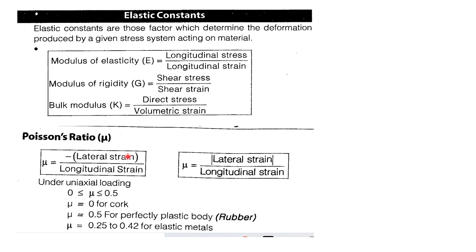Poisson's ratio ranges from 0 to 0.5: 0 for cork, 0.5 for rubber (perfectly elastic body). For elastic metals it is 0.25 to 0.4. Mild steel is 0.286, approximately 0.27 to 0.28.